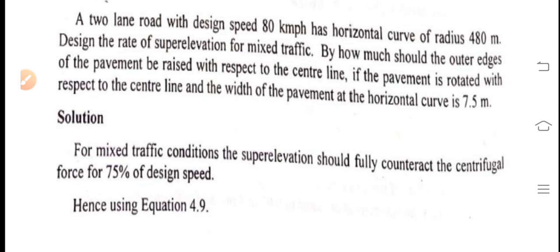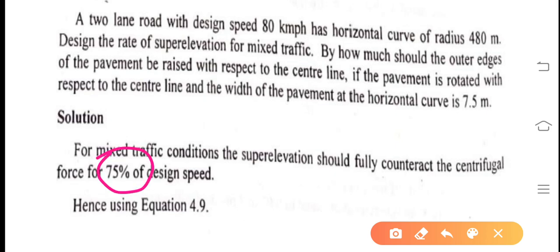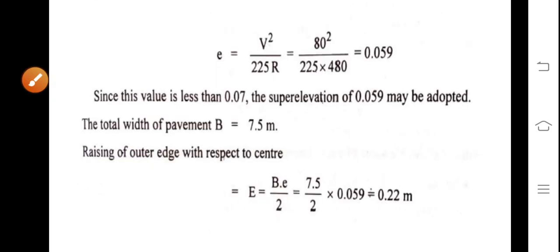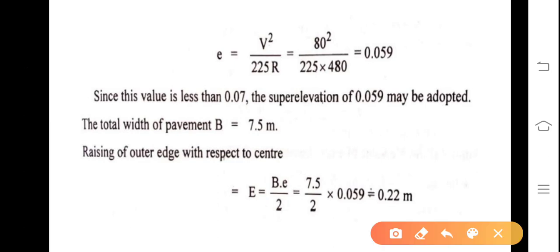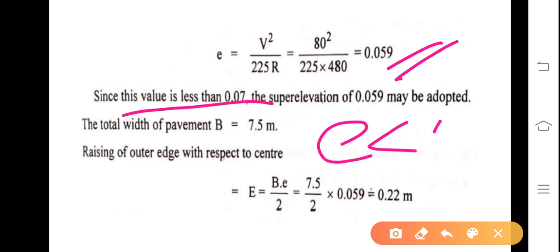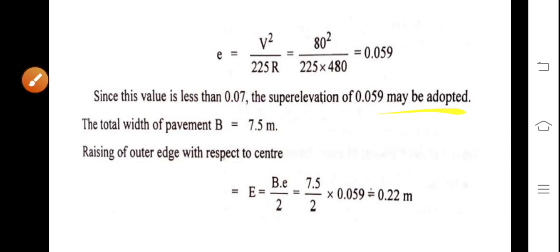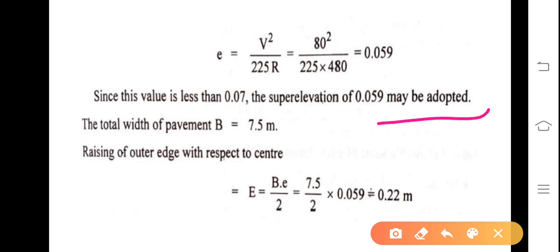For mixed traffic flow conditions, the super elevation should fully counteract the centrifugal force for 75 percent of the design speed. That is the first step. e = v² / 225. Substituting values, you will get 0.059. This is less than 0.07, so the super elevation of 0.059 may be adopted.